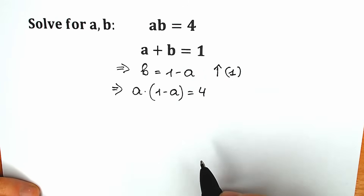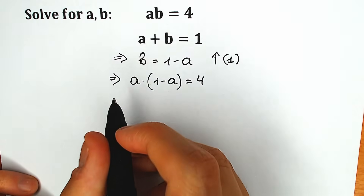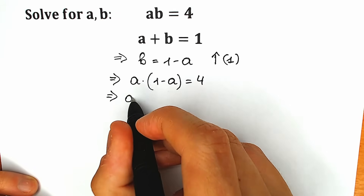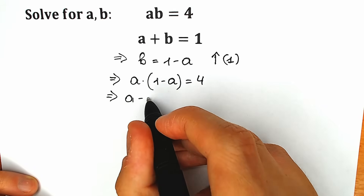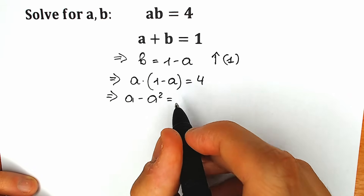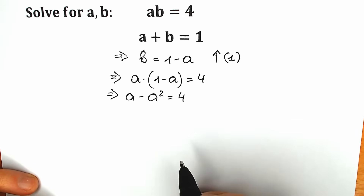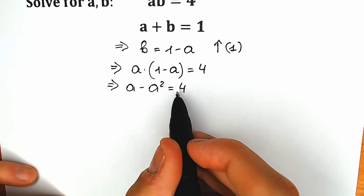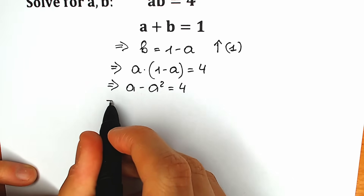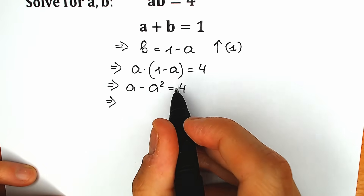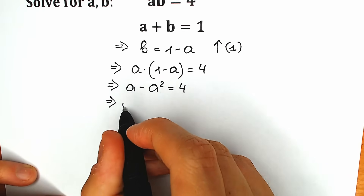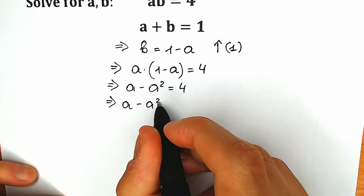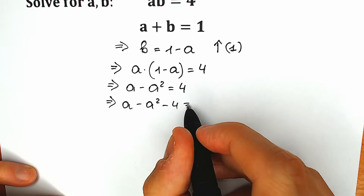Let's simplify this — it looks like a quadratic equation, let's see what happens. As a result we have a minus a² equal to 4. Now we need to have 0 on the right side, so let's subtract 4 from both sides. As a result we have a minus a² minus 4 equals 0.